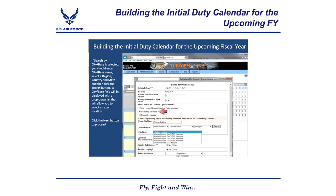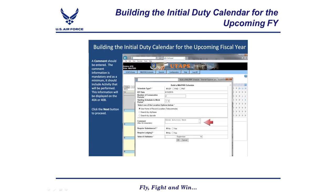A comment should be entered. The comment information is mandatory and, at a minimum, should include the activity that will be performed. This information will be displayed on the 40A or 40B. Please note that once the comment has been submitted, the only way to change a comment is to delete the date from the calendar and rebuild the periods in the calendar.